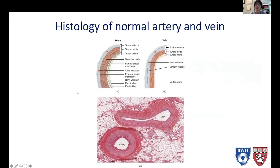To understand the histopathology of AVM, let's review some histology of normal arteries and normal veins. These pictures are actually pictures of the peripheral arteries. The intracranial arteries are slightly different, but it's close enough.